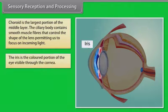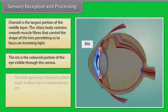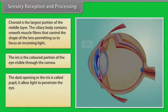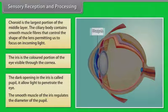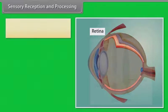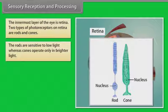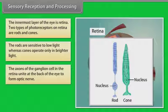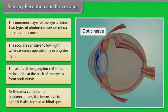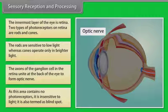The iris is the colored portion of the eye visible through the cornea. The dark opening in the iris is called the pupil, which allows light to penetrate the eye. The smooth muscles of the iris regulate the diameter of the pupil. The innermost layer of the eye is the retina. Two types of photoreceptors on the retina are rods and cones. Rods are sensitive to low light whereas cones operate only in brighter light. The axons of the ganglion cells in the retina unite at the back of the eye to form the optic nerve. This area contains no photoreceptors and is insensitive to light — it is also termed the blind spot.